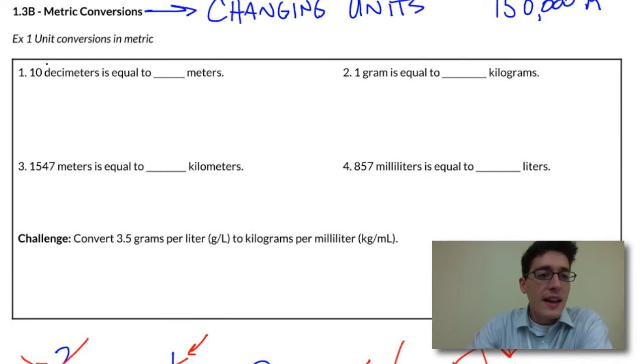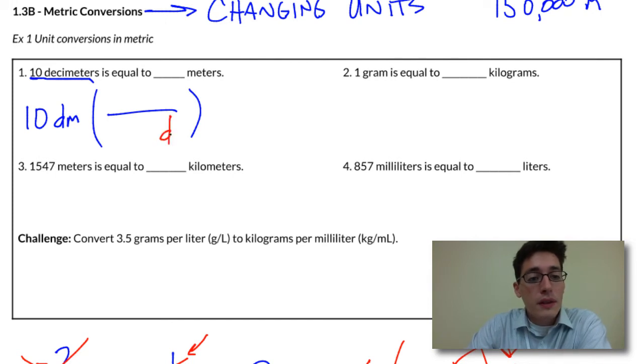The first question gives us 10 decimeters. And we always start with a quantity of something. So we're just going to copy this down, 10 dm. And now we need to fill in our ratio. Just like we did down here. If I want to cancel out decimeters, its partner needs to be opposite. So decimeters goes on the bottom. Remember, we can put this over a value of 1. And that's where the numerator and the denominator come into play.